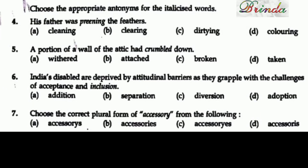Next, choose the appropriate antonyms for the italicized words. Question 4: 'His father was preening the feathers' — from the seagull lesson. Preening means adjusting, neatly arranging. We need the opposite. The opposite of preening is dirtying. That is the answer.